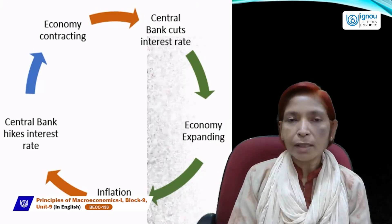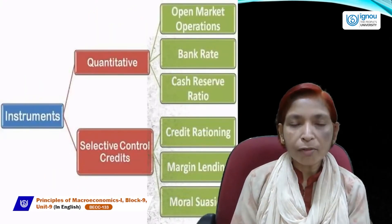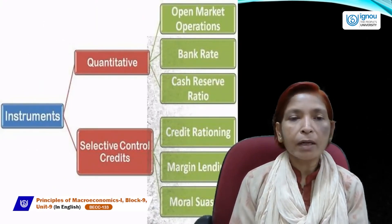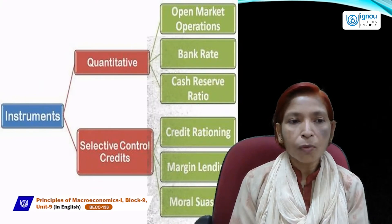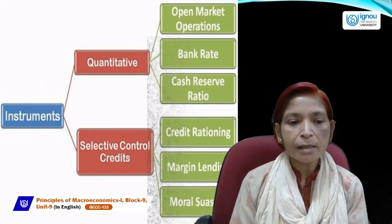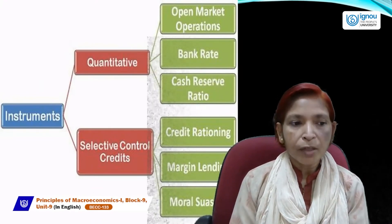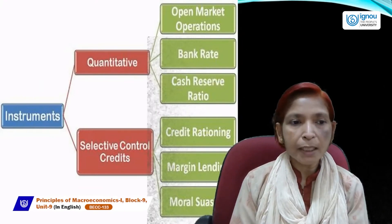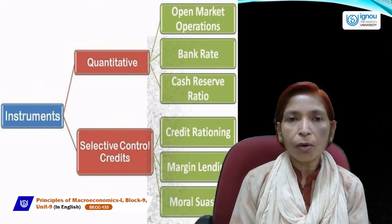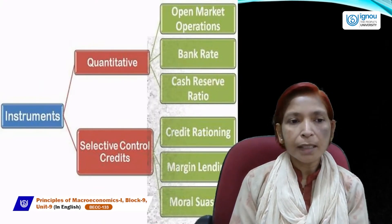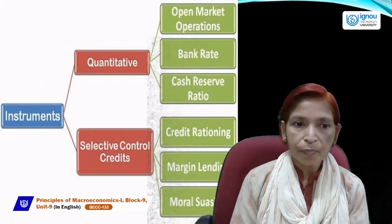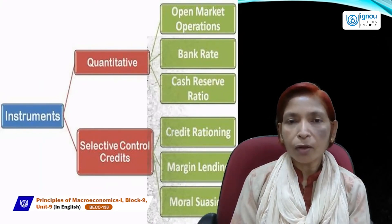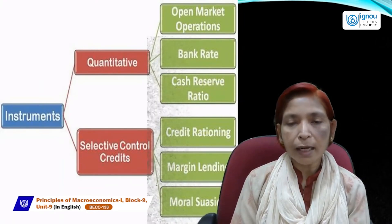The instruments of monetary policy are two types: quantitative and selective (qualitative) credit control. Under quantitative measures there are three: open market operations, bank rate, and cash reserve ratio (CRR). Under selective or qualitative credit control, the measures are credit rationing, margin lending, and moral suasion.